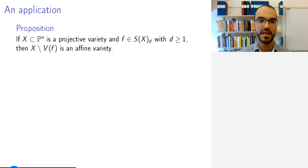As an application, we will have the following interesting result. Namely, if you take a projective variety and some homogeneous polynomial of degree d, not constant, then removing the zero set of this one single polynomial provides you with an affine variety.